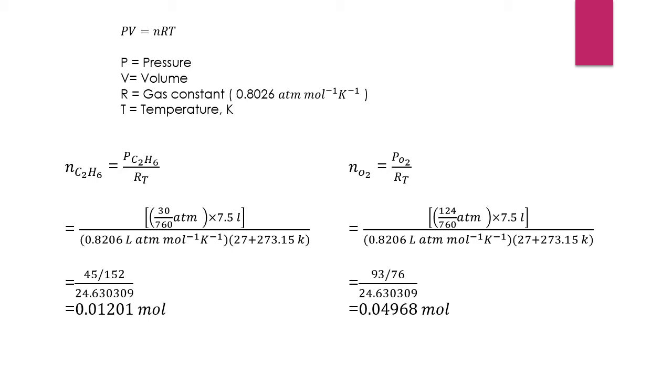So 30 divided by 760, we will get it in atm unit. Since the temperature given is in degrees Celsius, we need to add 273.15 to convert it to Kelvin unit.